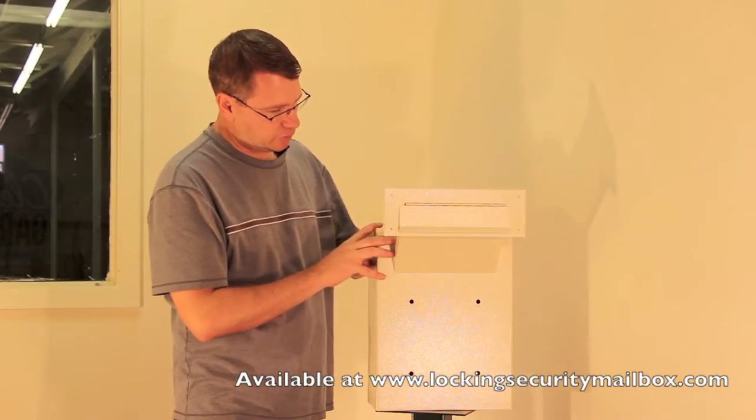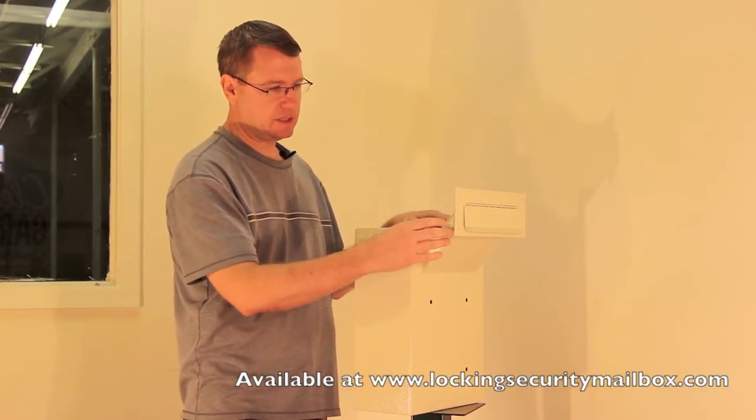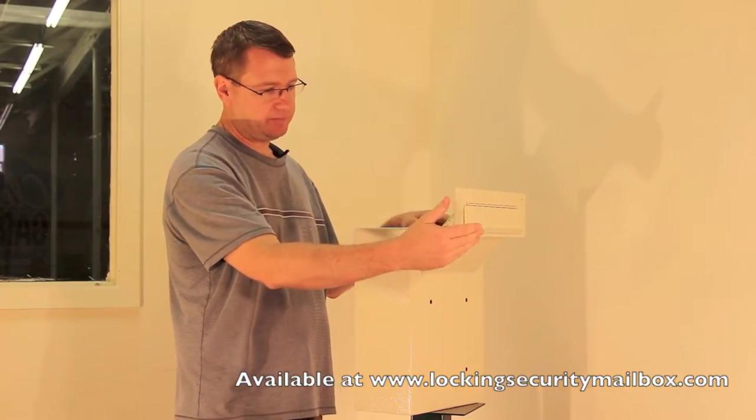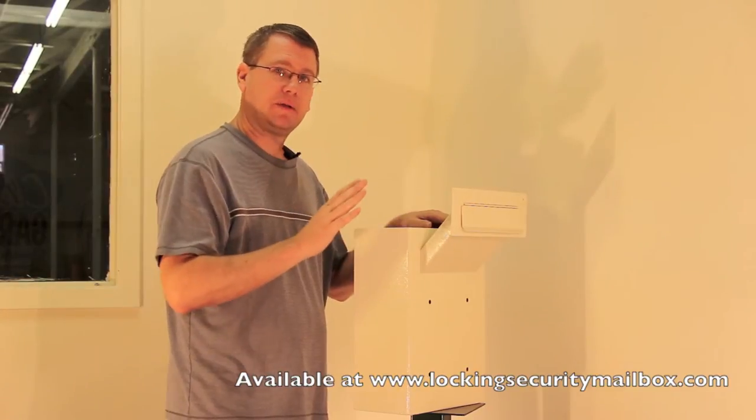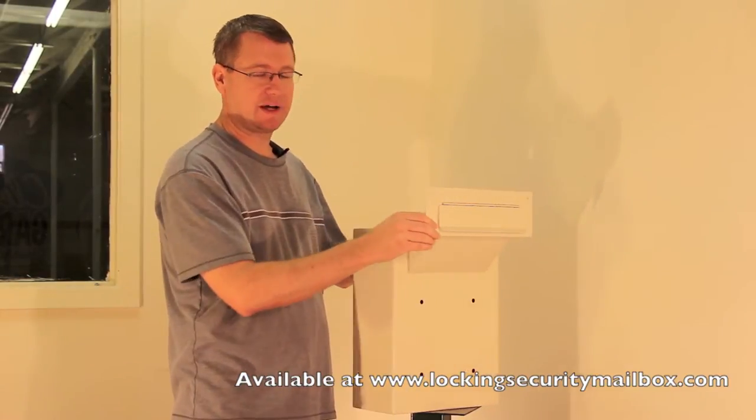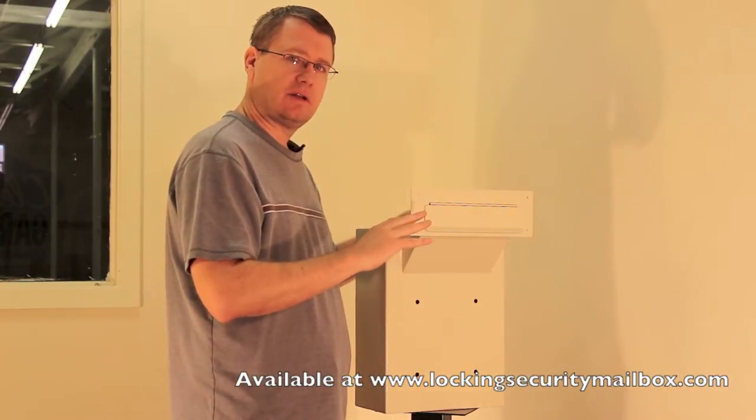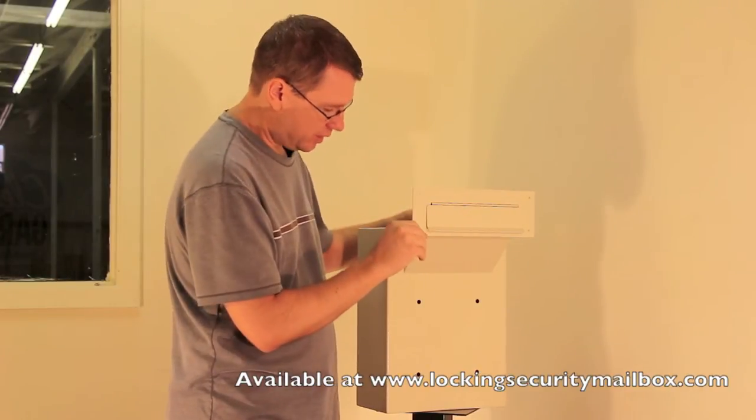Now what's unique about this through-the-wall locking drop box is as you can see here it's got a neck that allows the drop area to be on the exterior and then the receptacle be in the interior. Now let me note real quickly though that this isn't designed to be in direct weather. If it's in indirect weather like underneath an eave or a large porch area you're going to be okay, but it doesn't want to be in direct weather.